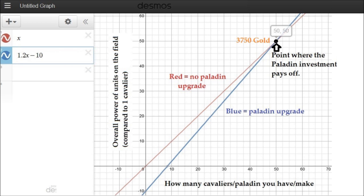So if we look for the intersection on that system of linear equations, what we find is that when x equals 50, and x was the number of Cavaliers we're making, then we're getting the same amount of power on the field. What that says, if we convert it back to gold, is that if you're planning to spend 3,750 gold in total on your Knight line, then it's worth it to get the Paladin upgrade.